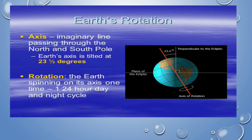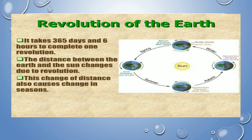Rotation and revolution are different. Revolution takes 365 days; rotation takes 24 hours. Revolution of Earth takes 365 days and 6 hours to complete one revolution. The distance between the Earth and the Sun changes due to revolution, and this causes changes in seasons.